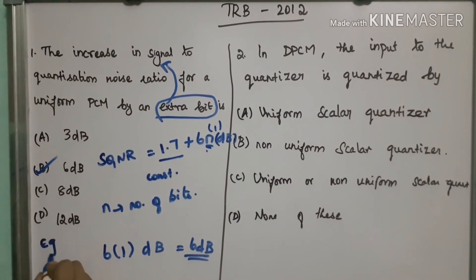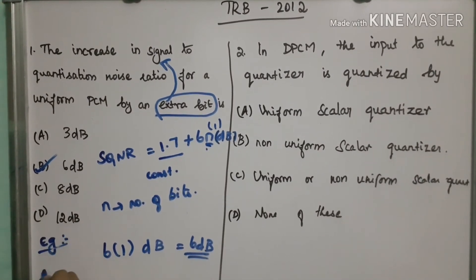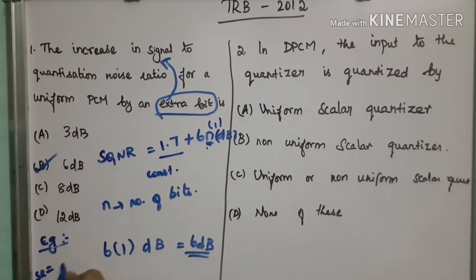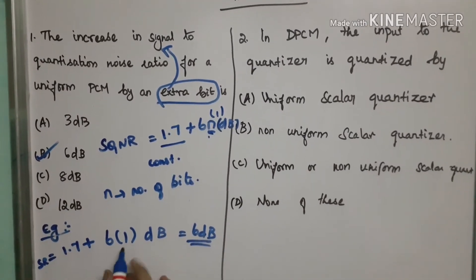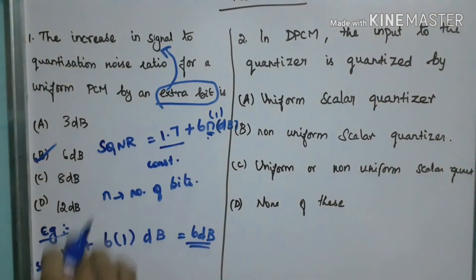See here let us consider this example. 1.7 plus 6 into 1 dB. If we consider here they mention 1 extra bit.